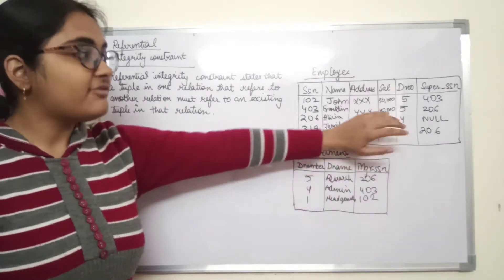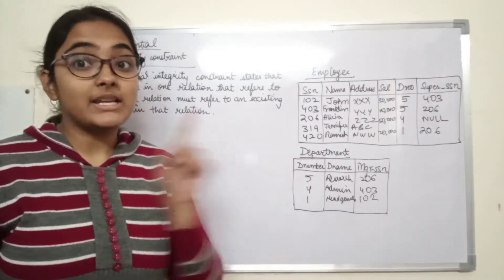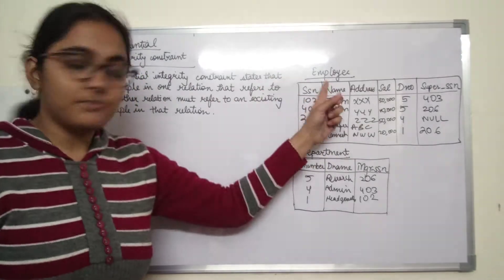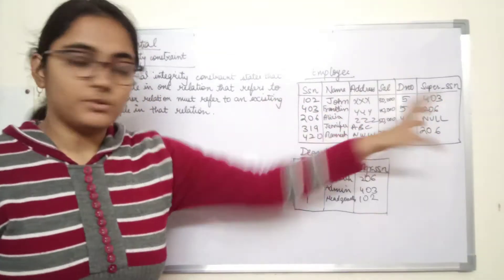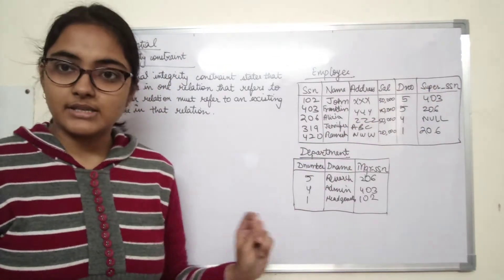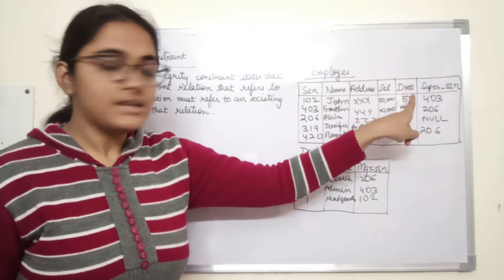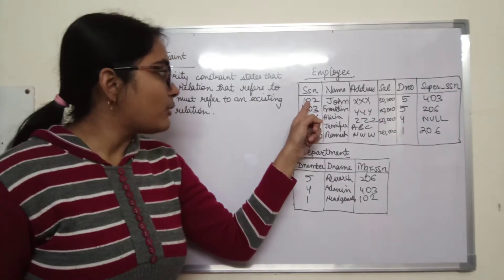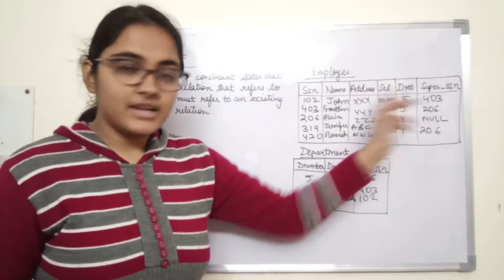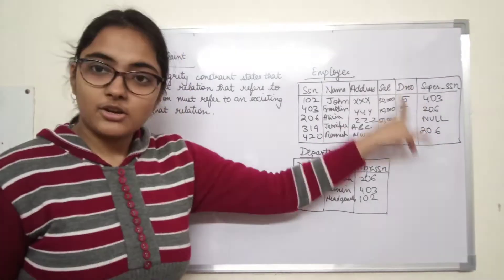It states that if a tuple in one relation refers to another relation, it should refer to an existing tuple in that relation. This is an employee relation — it stores details about an employee: social security number, name, address, salary, D number, and super SSN. D number refers to the department number for which this employee works. This particular employee with SSN 102 works for department number 5.